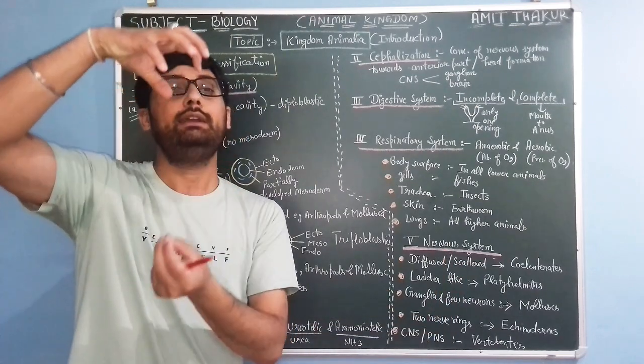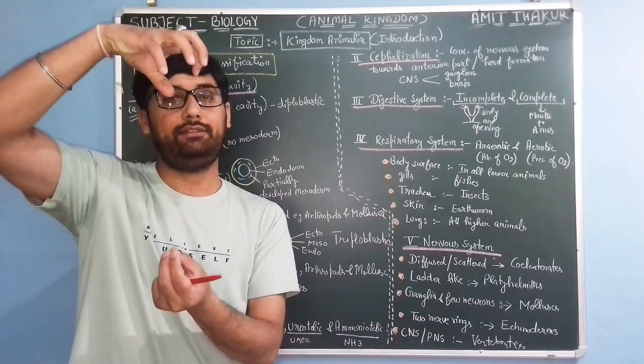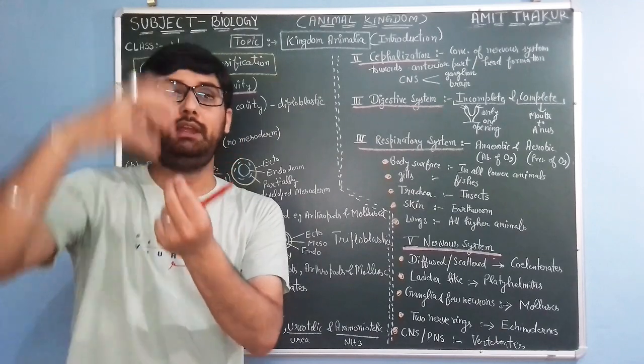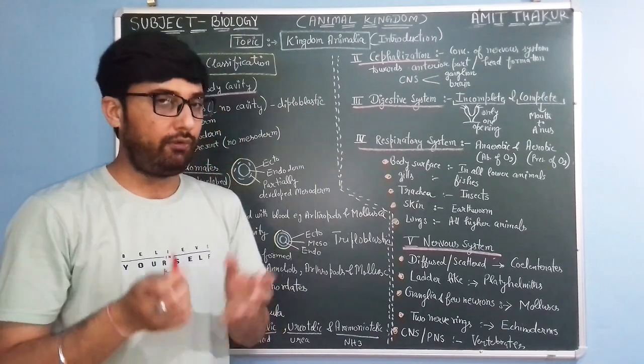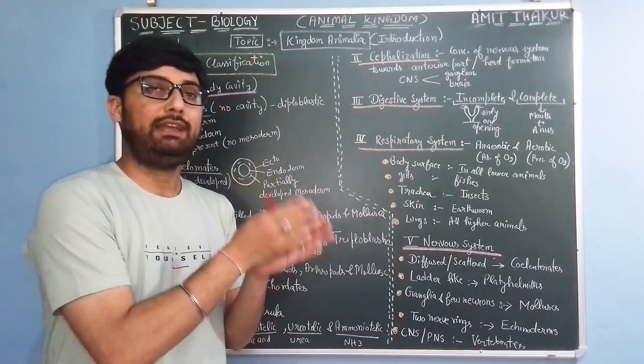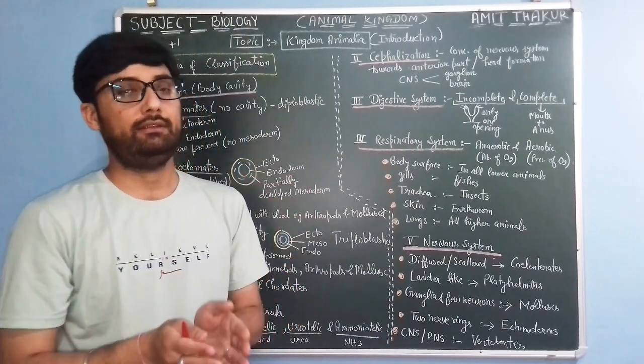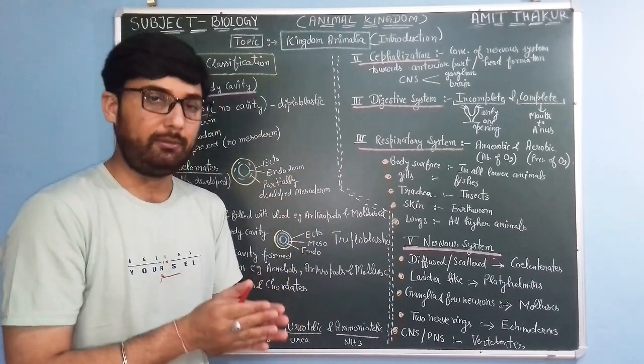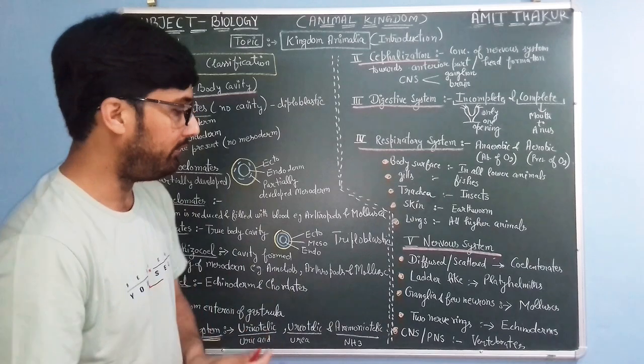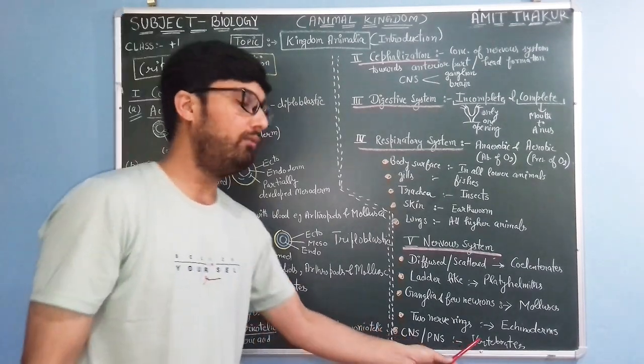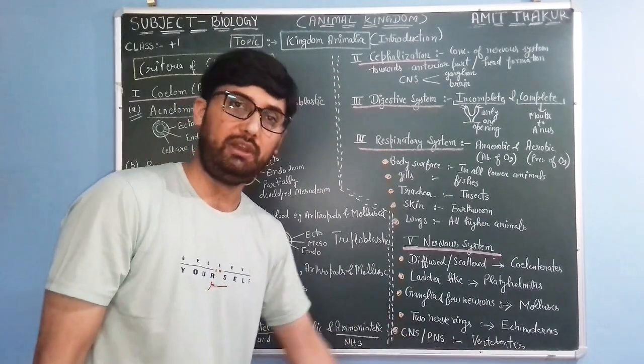The spinal cord gets connected with the brain and forms CNS and PNS — central nervous system and peripheral nervous system — in vertebrates.